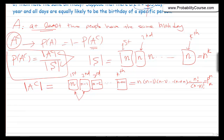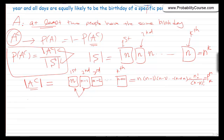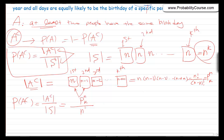We are almost done. We found the number of elements in A complement, so P(A complement) = P(n,k) / n^k. Therefore, P(A) = 1 − P(n,k) / n^k.